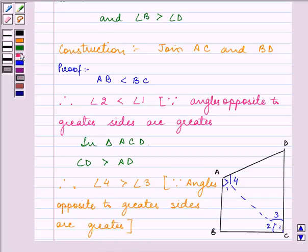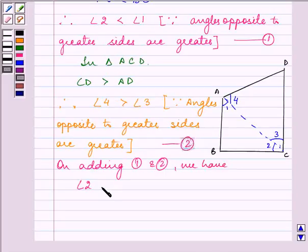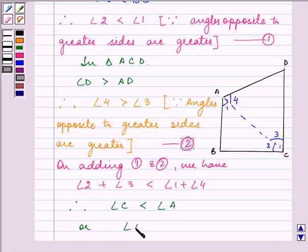Now, on adding 1 and 2, we have angle 2 plus angle 3 is less than angle 1 plus angle 4. Or angle 2 plus angle 3 is angle C is less than angle A. Or angle A is greater than angle C. So this proves one of the parts of the question.